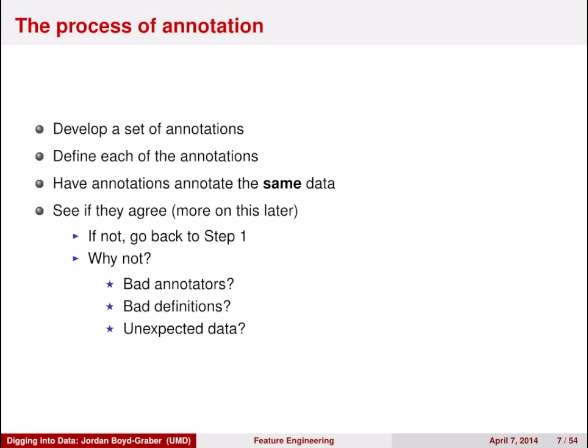The process of going from unannotated data to annotated data has a fairly common trajectory. First, you need to decide what the possible labels are. Then you need to define what each of those labels means. Then you need to have annotators annotate the same data multiple times and see if they agree on the data points.